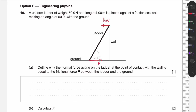We're also told it's a uniform ladder, so the weight is distributed equally and we can model it as a force acting downward at the middle of the ladder. This means the weight acts at 2 meters from each end.